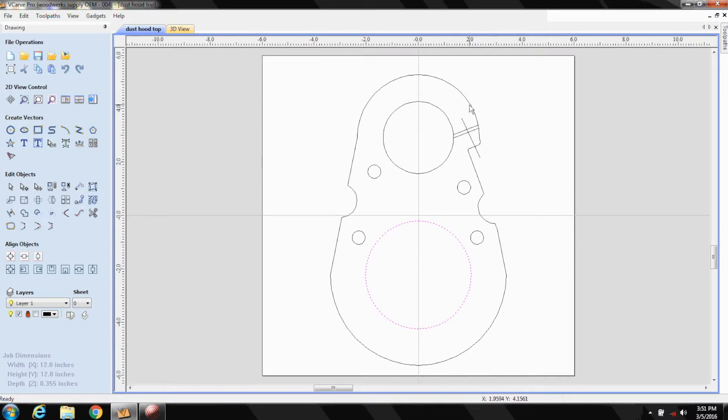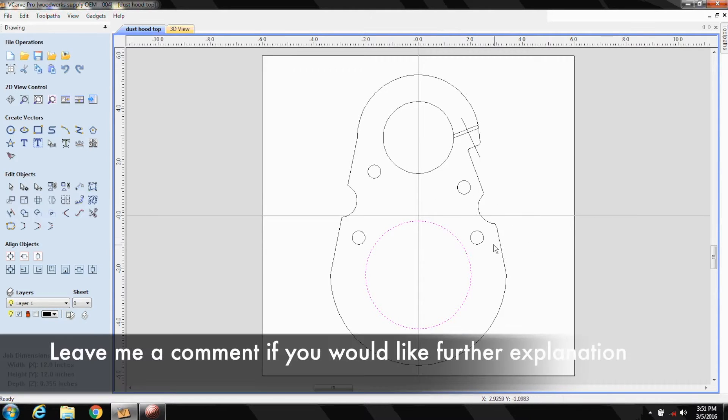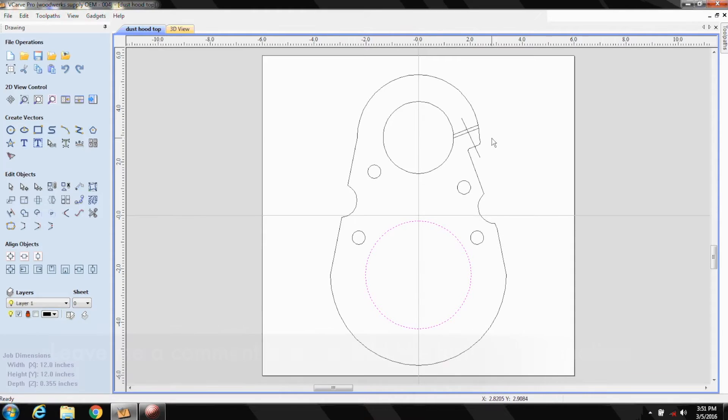So I did this, drew a circle, offset, drew a circle, offset, connected lines, trimmed out a couple of thumb holes, inserted some half inch pocket holes for the magnets. Pretty simple. I don't think I need to go through all that.